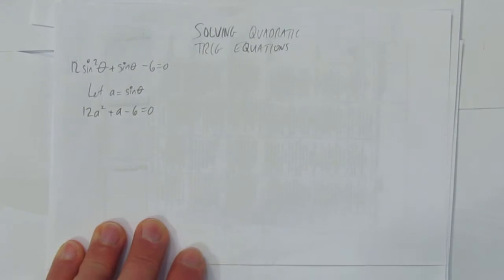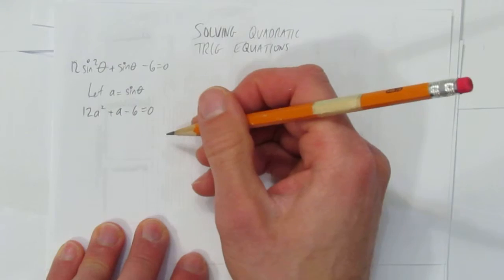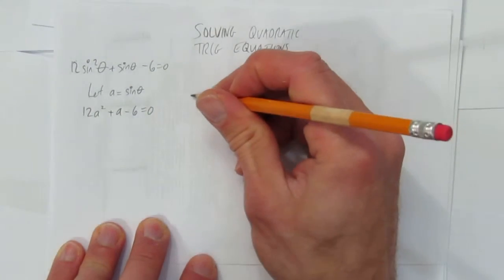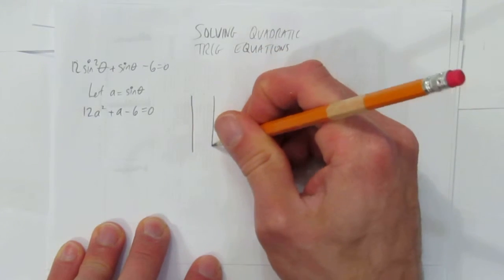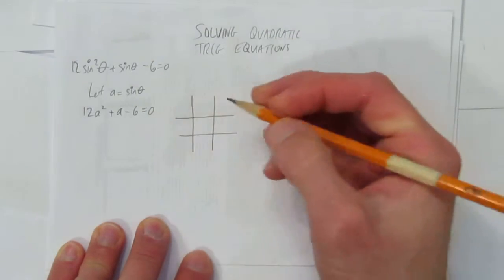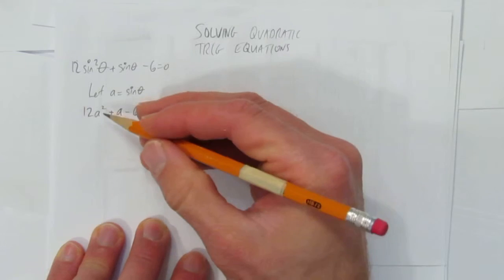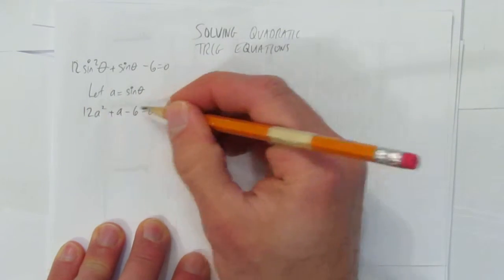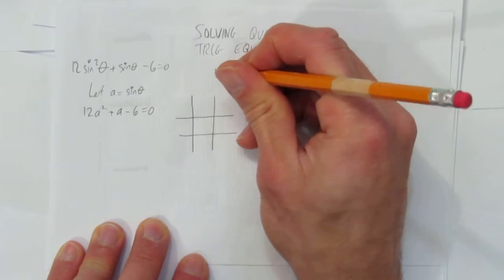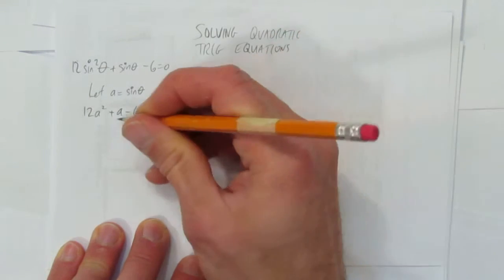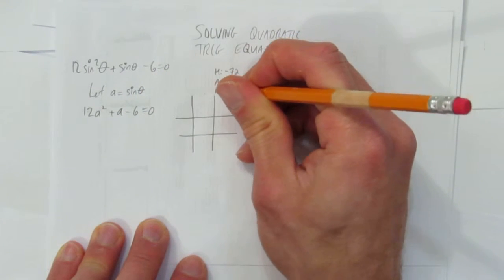When you're solving quadratics, there's different ways to solve this. One method is chart method, another is decomposition. I'm going to demonstrate chart method. If you prefer decomposition you can watch the video on that. So what am I trying to do? I'm trying to multiply to this times this, a times c. So I'm trying to multiply to negative 72. And I'm trying to add to the coefficient here which is just a 1. So what are my two numbers?